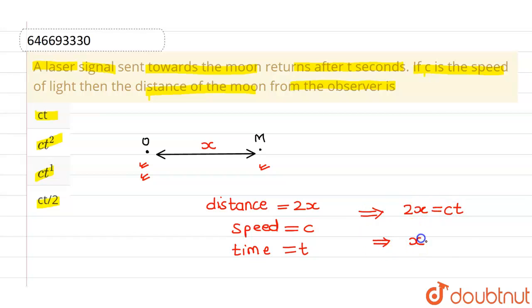So, from here, I will be getting distance between observer and moon as Ct by 2. So, Ct by 2 is the correct option which is given in option 4. So, option 4 is correct and rest options are incorrect. I hope you understood. Thank you.